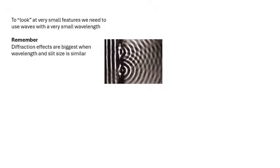To look at very, very small things, we need to use waves with a very, very small wavelength. You should remember that diffraction — you get the best diffraction through a slit if the size of the slit is about the same size as the wavelength of the waves. Look at this ripple tank image here. If the size of the slits is about the same size as the wavelength, you get lots of diffraction, you get lots of information about what's going on — in other words, about the slits.